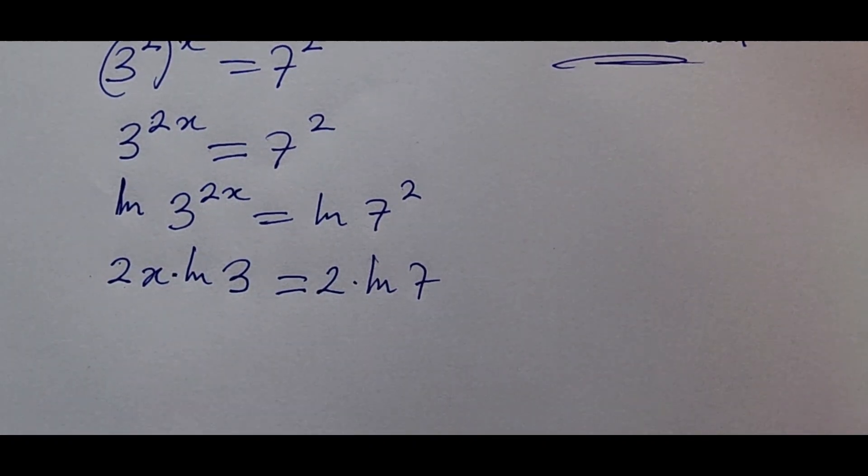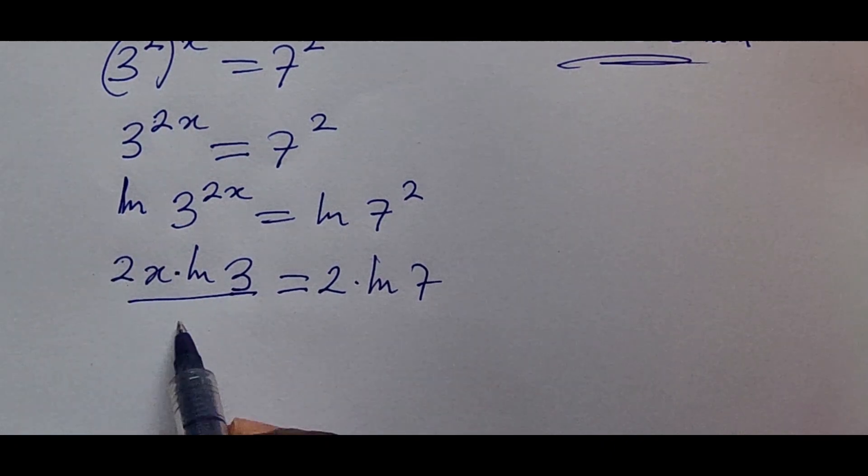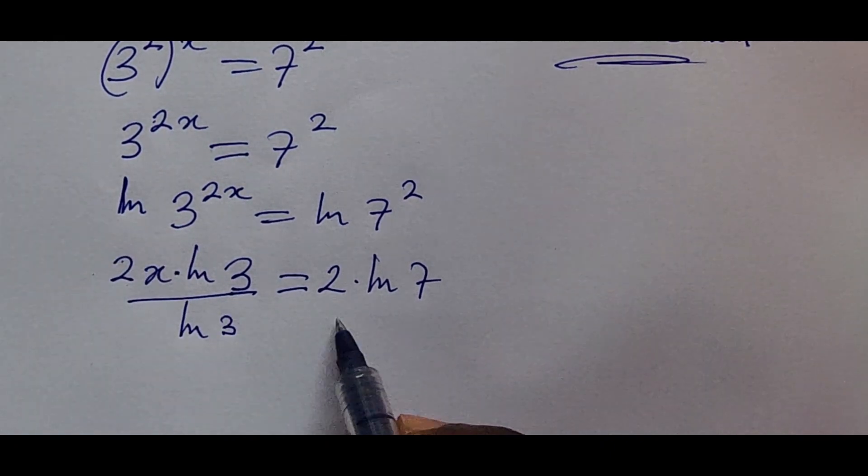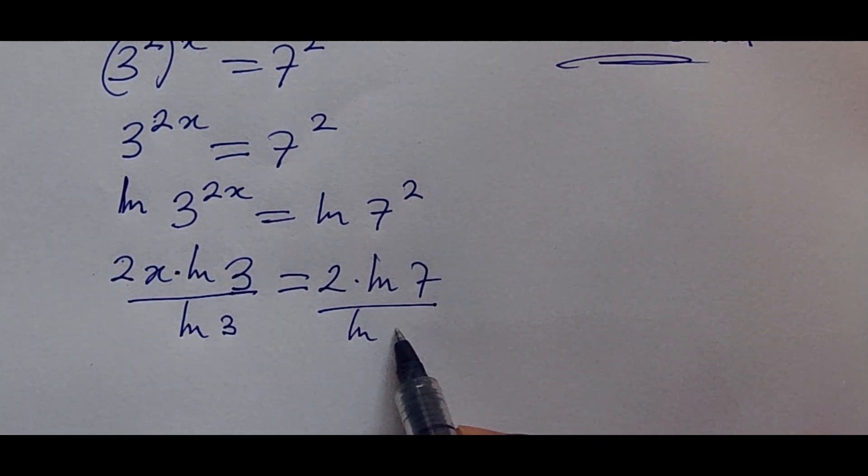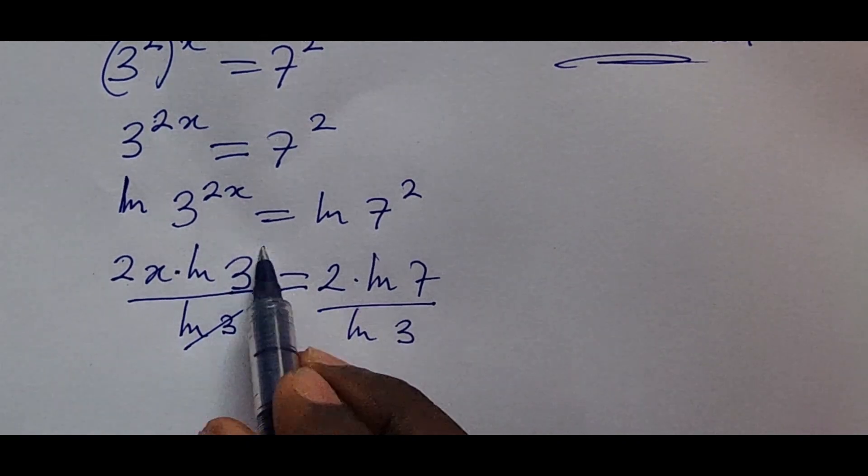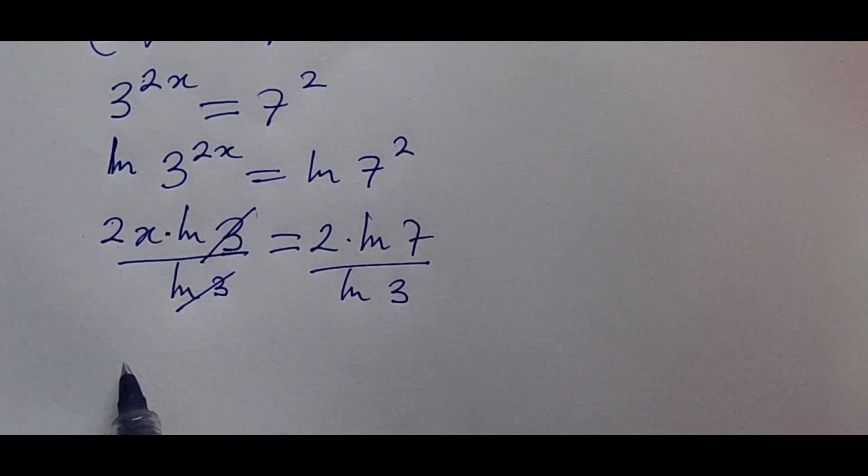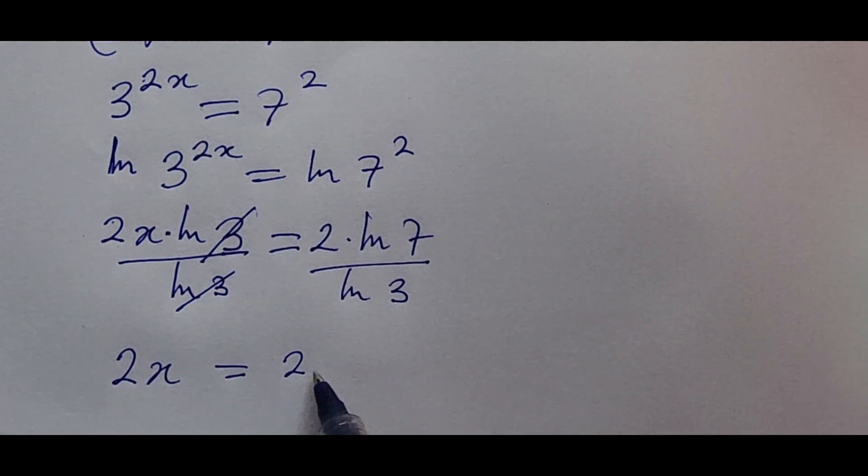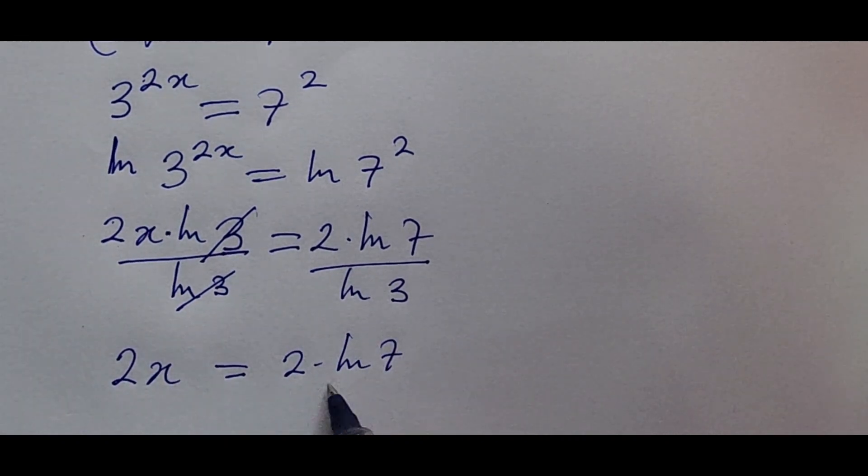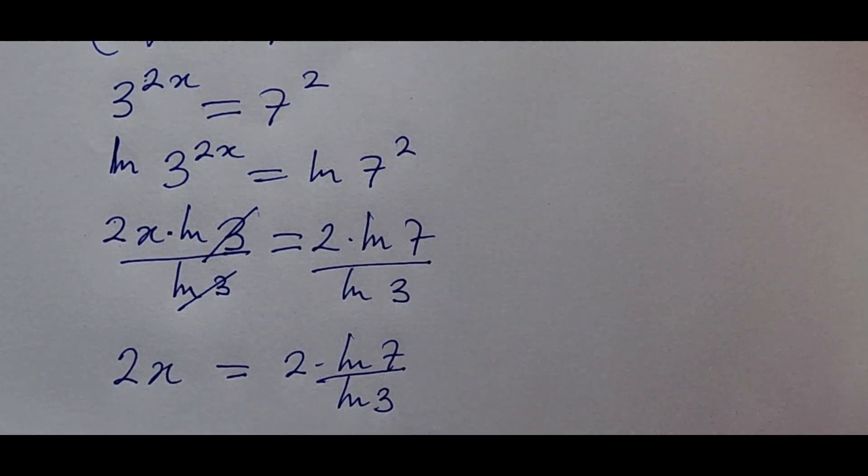And so we divide by the ln of 3 because we are looking for x. So x is equal to 2 times the ln of 7 all over the ln of 3.